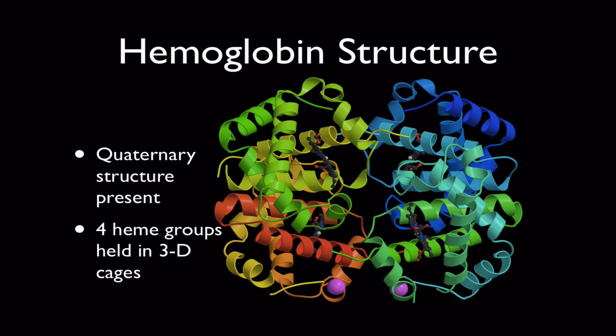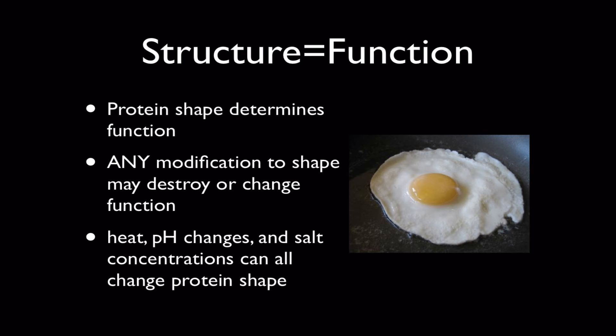Now structure is very closely associated with function in proteins. The shape or the structure of a protein determines its function and anything you do to change the shape of a protein may alter, destroy, or completely change the function of that protein. Many things can change the shape of protein molecules. Things like heat, changes in pH, changes in salt concentration. All these things can change the shape of a protein and everybody has seen this whether you realize it or not.